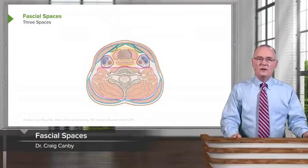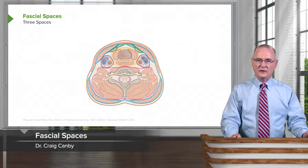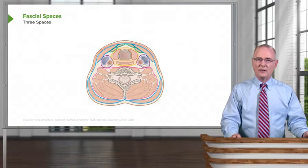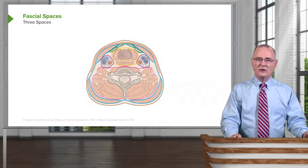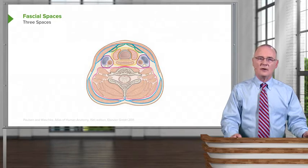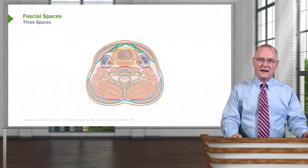Now we're going to transition over to fascial spaces. There are three spaces that can form between the deep fascial layers. We're going to be able to see two of these areas very well. The third, unfortunately, is not well illustrated in the image, but we'll make note of the fact that it does exist.